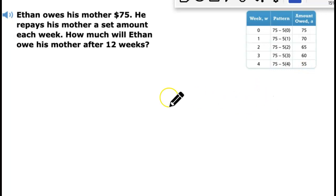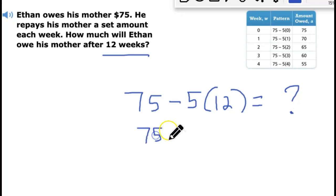Looking at the pattern, we could also say at 12 weeks, 75 minus 5 that he pays every week, and this is the 12th week. We don't know how much it is yet. Now we could say 75 minus 60, so it looks like he still owes $15 at 12 weeks.